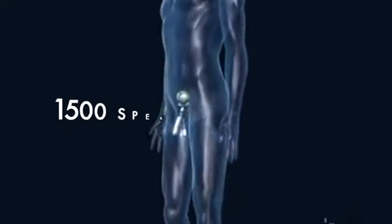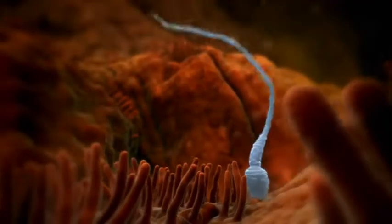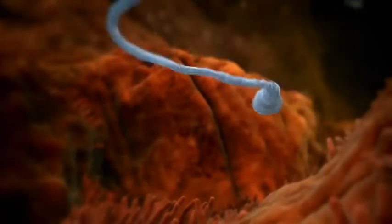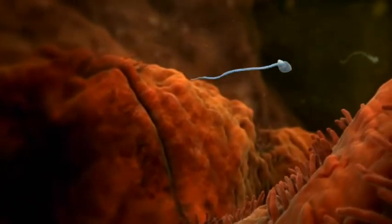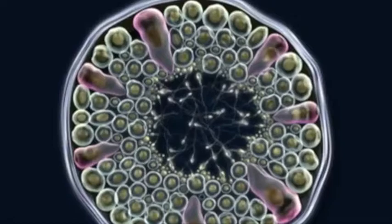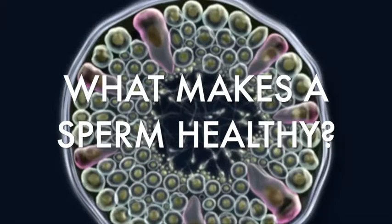The average man makes 1,500 new sperm cells every second. While it only takes one sperm to fertilize an egg, a lot of the sperm coming out of the factory aren't really up to the challenge — many are slow, dead, deformed, or mutilated. According to the World Health Organization, there are four main sperm health parameters driving your fertility.